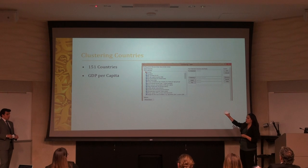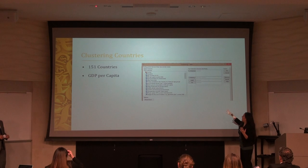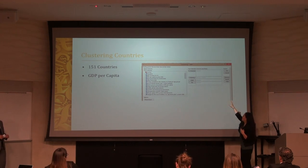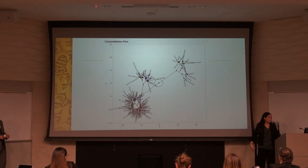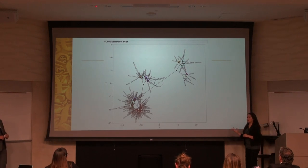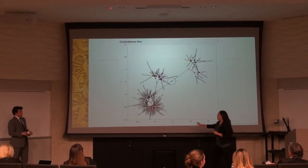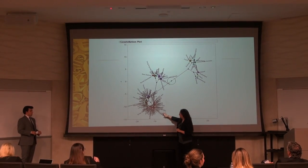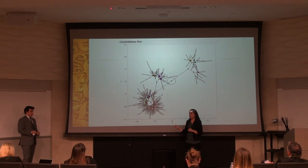Here you can see how JMP works. In the Y column, we input what we wanted to organize by — for us, we labeled by country and organized by GDP per capita.